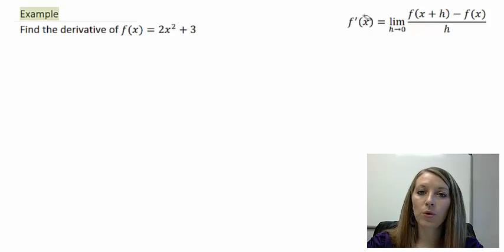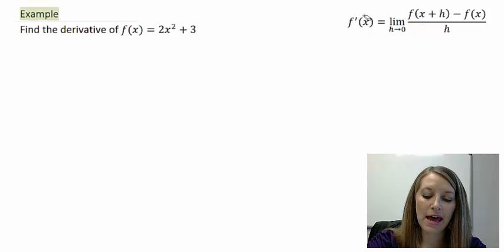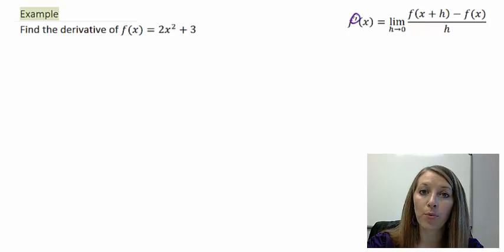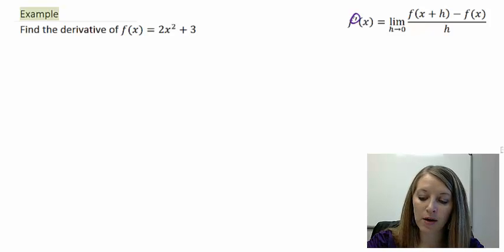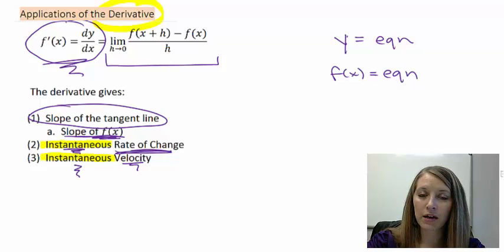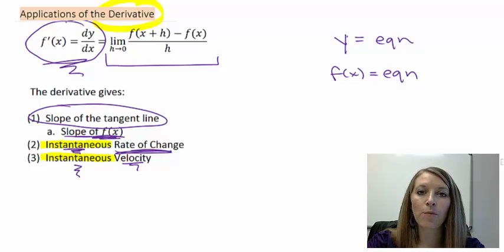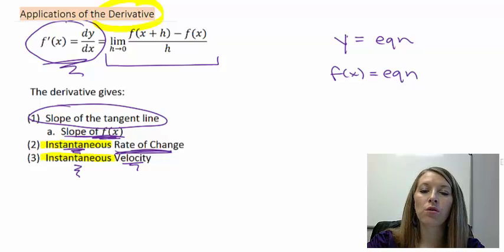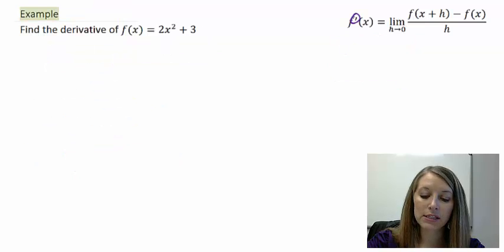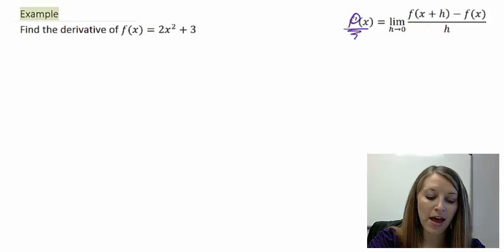The notation we use to represent the derivative is f prime of x. This apostrophe is called the prime. f prime of x means the derivative of the function — the slope of the tangent line, which is the exact same slope of the original equation, giving us our instantaneous rate of change or instantaneous velocity. Anytime we take the derivative, the notation is f prime of x.